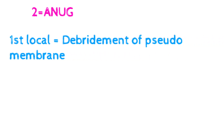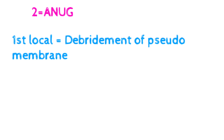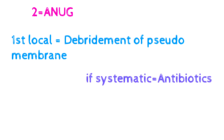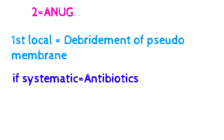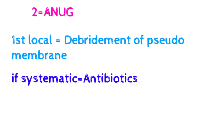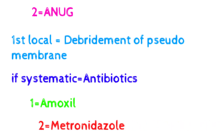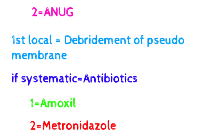Now for the second condition — acute necrotizing ulcerative gingivitis. Again, local treatment comes first: we do debridement of the pseudomembrane on the marginal gingiva, because in acute necrotizing ulcerative gingivitis there is a pseudomembrane. We debride it first. If systemic signs are present, then we go for antibiotics. In acute necrotizing ulcerative gingivitis, we give only two types of antibiotics: number one is amoxicillin, and number two is metronidazole.